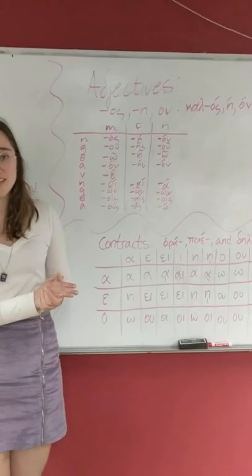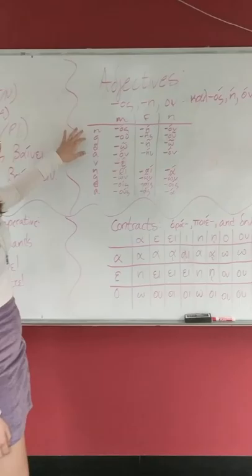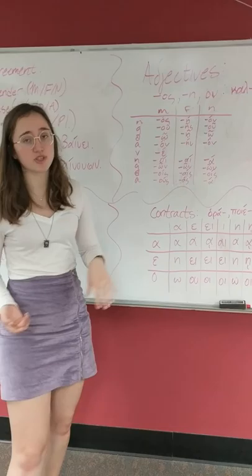Moving right along, we've got adjectives. These are ending in os, a, and on. A good example is kalos, beautiful. So jumping right in, it's the same cases. So we've got nominative, genitive, dative, accusative, and you also have vocative, which is just when you're like, hey you!